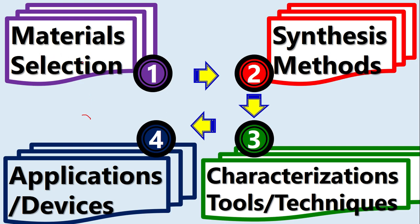Don't worry — I will explain it thoroughly in detail, but first I want to give you the concept. You have to choose your material first. This is the first and foremost step. When you choose a material, you also have to link that material to a device application. Because if you select a very good material but that material has no application, it is useless. So when you are choosing your material, you have to look into the applications — whether this material will give good results and good performance in your applications.